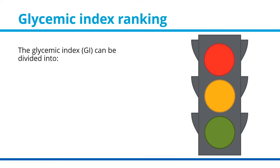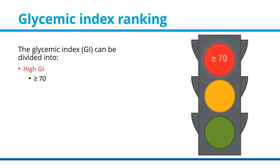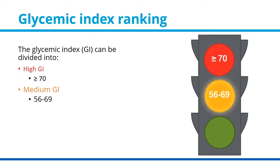Glycemic index ranking: the GI can be divided into high GI, which is greater than or equal to 70; medium GI, between 56 and 69; and low GI, which is less than or equal to 55.